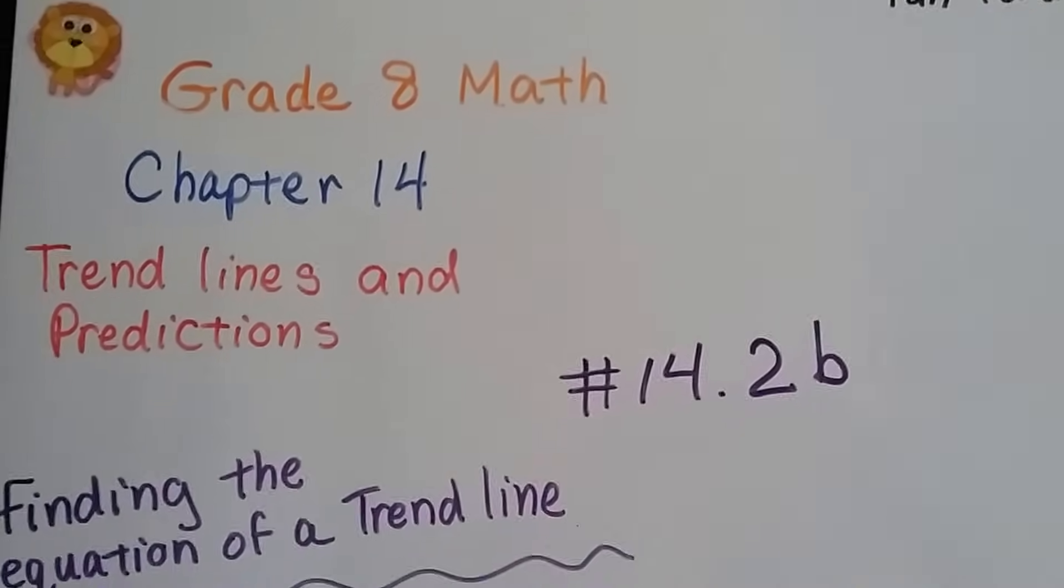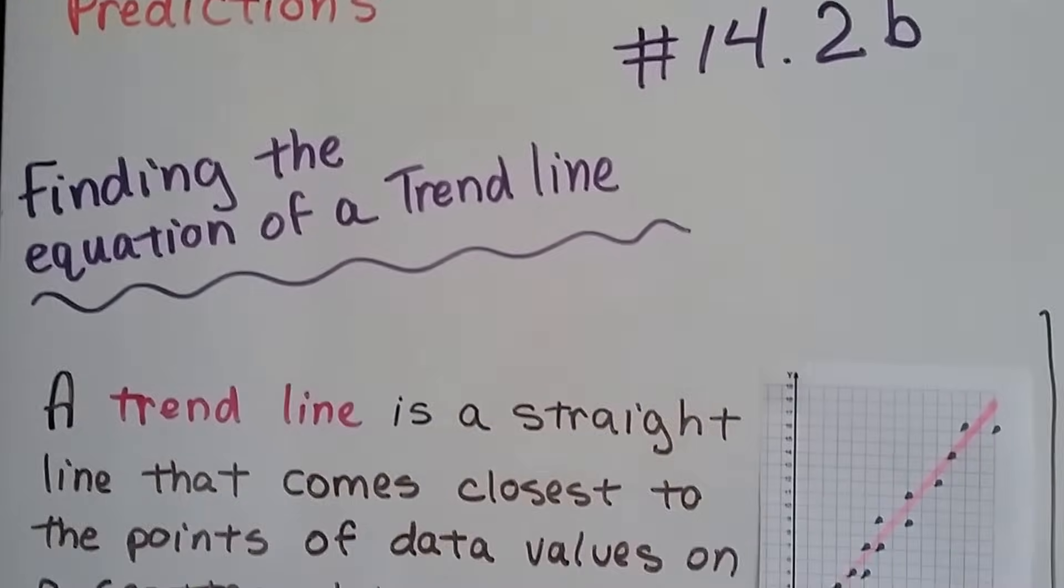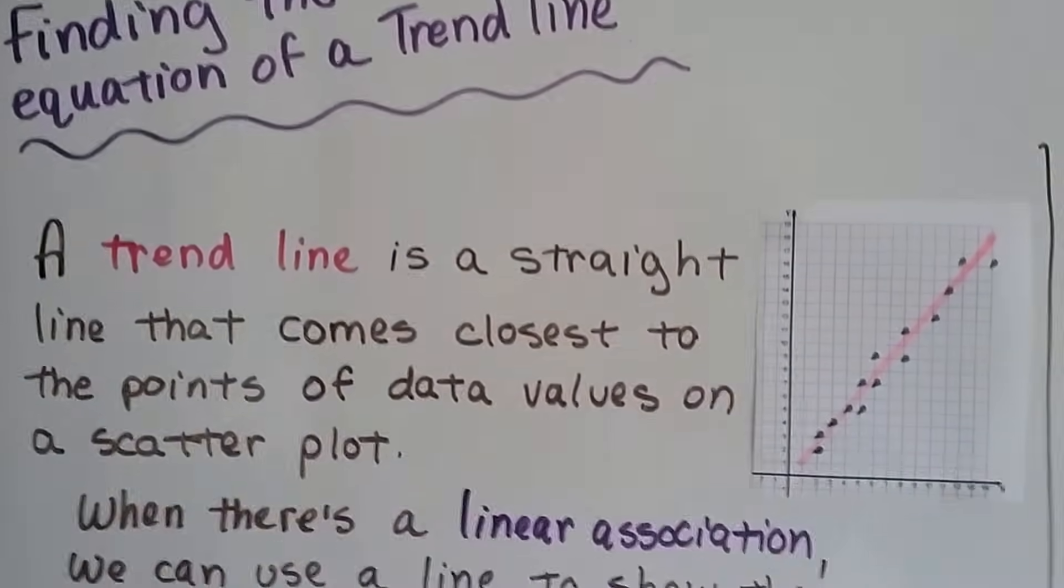Grade 8 math number 14.2b. We're talking about trend lines and predictions. Now we're going to talk about finding the equation of a trend line.